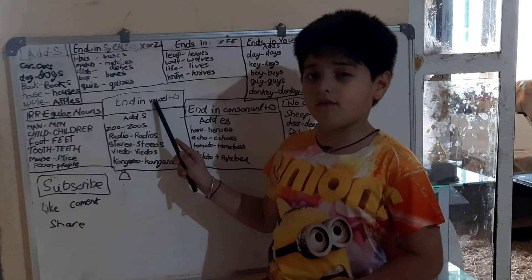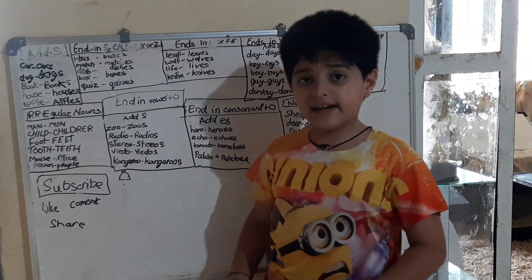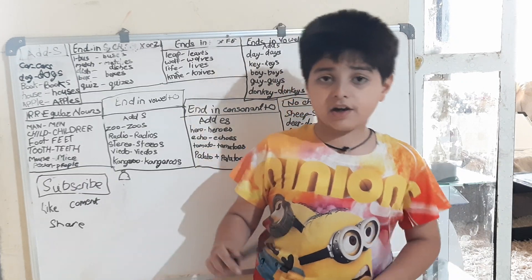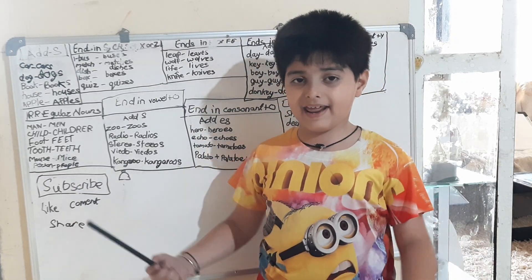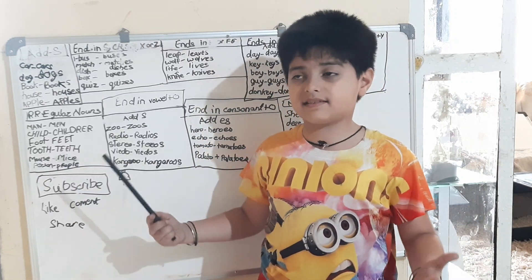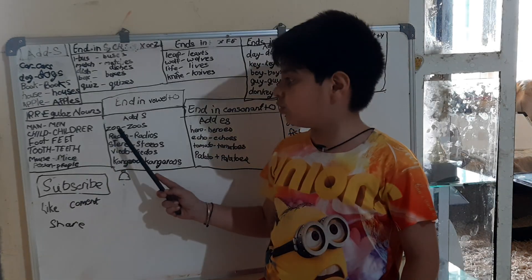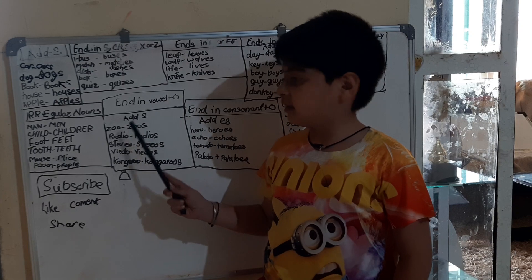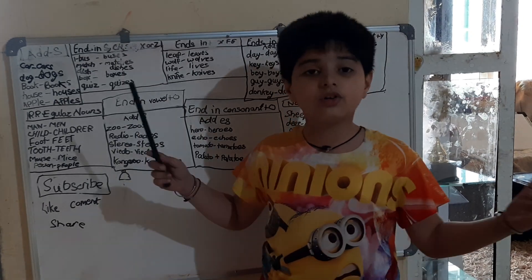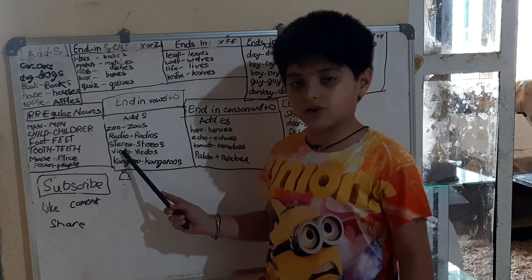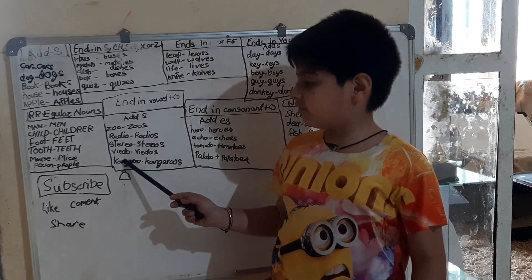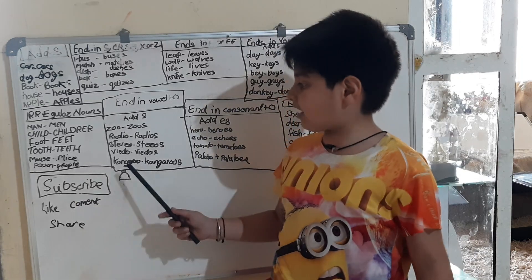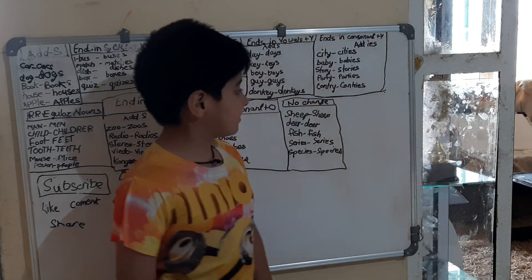We have ending in vowel plus O — it should be ending with O, but before it should be a vowel. Then we add S. Let's take an example: zoo becomes zoos, radio becomes radios, stereo becomes stereos, video becomes videos, kangaroo becomes kangaroos. Like this.